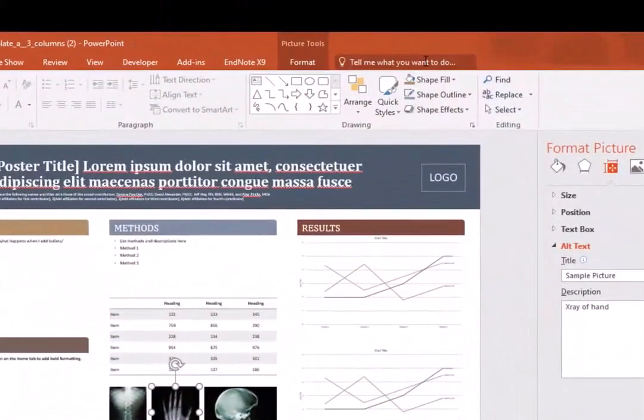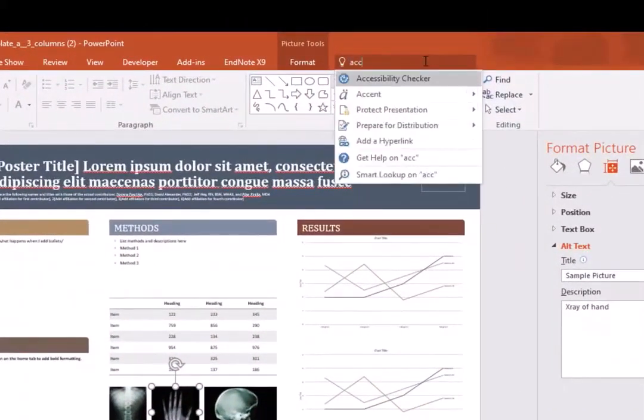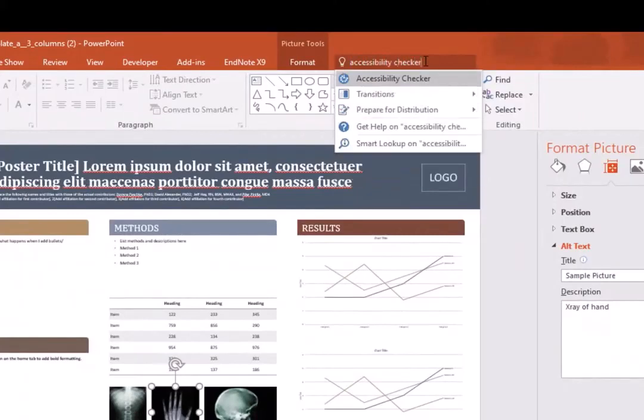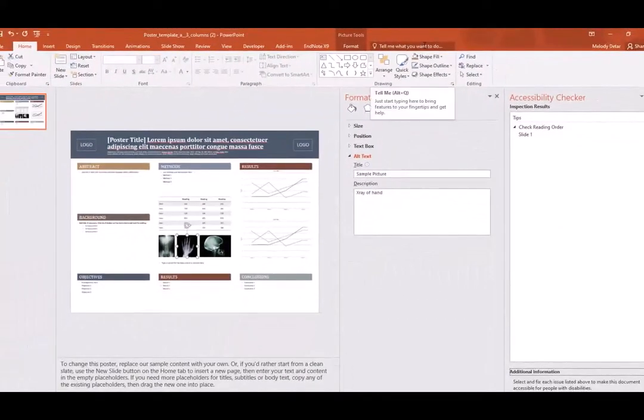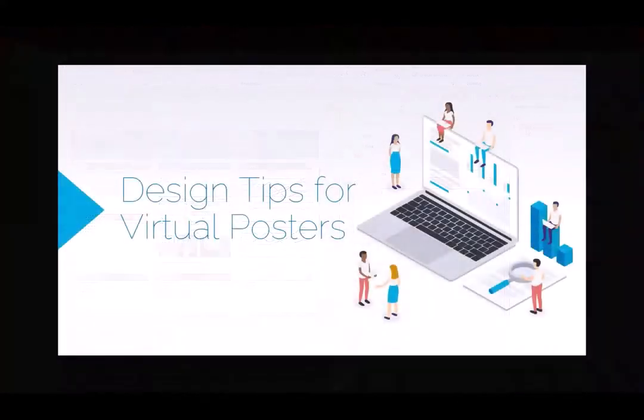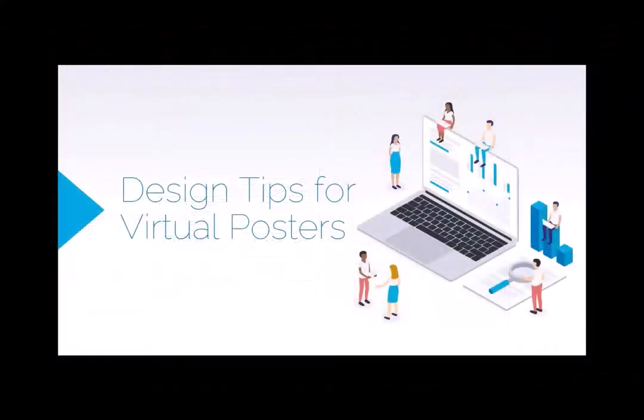Finally, PowerPoint is equipped with an accessibility checker that you can find quickly by searching accessibility checker at the top of a slide. It will show you any areas that the software detects could present accessibility issues. There's a lot of room for creativity within the core guidelines for effective design, so we look forward to seeing how you creatively describe your research.